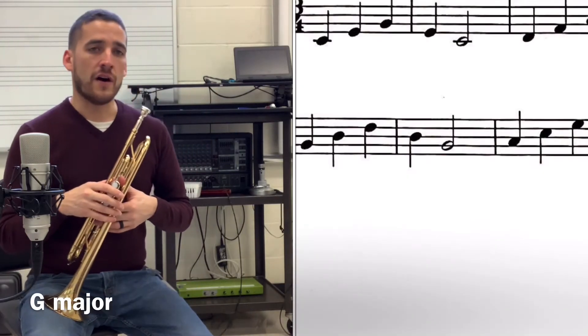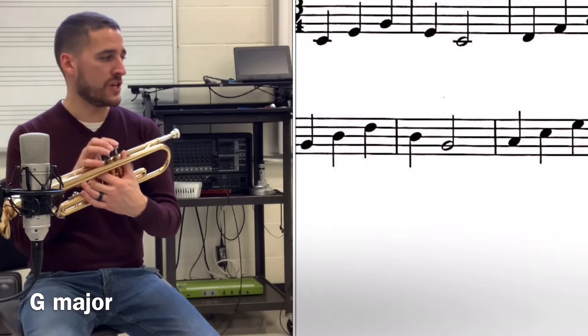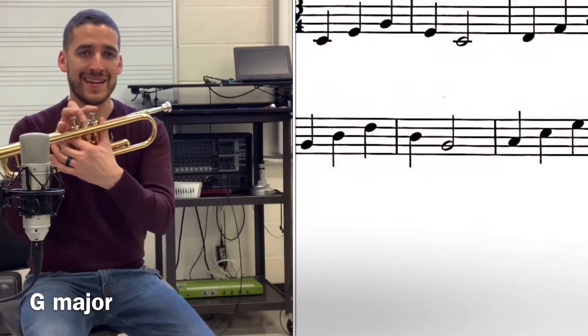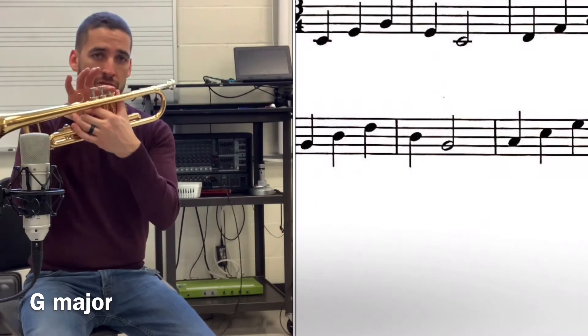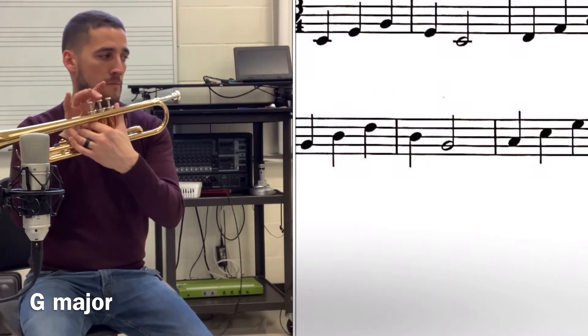All right, moving on to the fifth one. This is G, it's a major arpeggio: G, B, first valve D. Remember, first valve for the high D, you do not add the third, so you get G, B, D, back to B, and then open G.